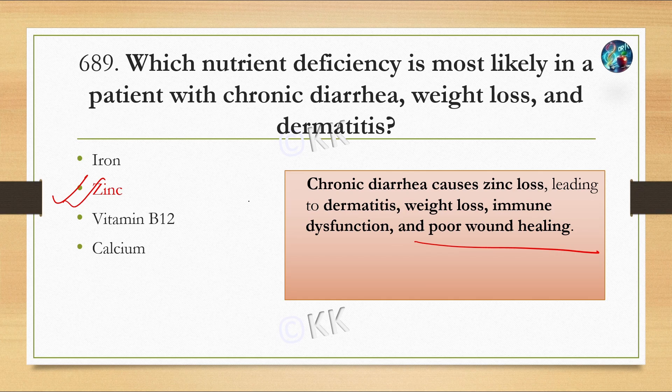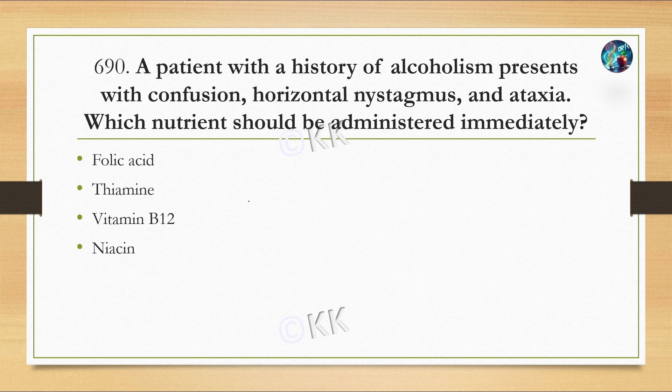Next question: a patient with a history of alcoholism presents with confusion, horizontal nystagmus, and ataxia. Which nutrient should be administered immediately? Option A: folic acid. Option B: thiamine. Option C: vitamin B12. Option D: niacin.